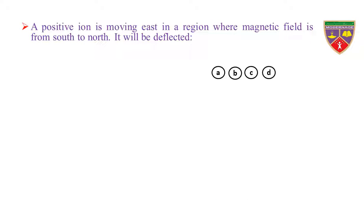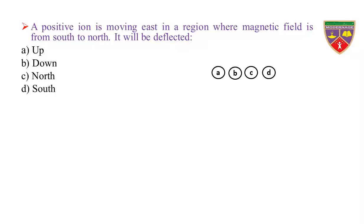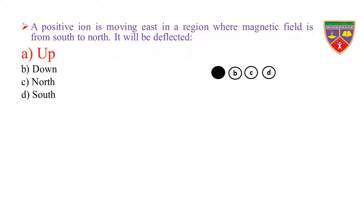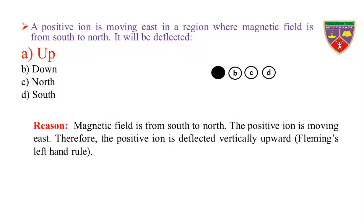A positive ion is moving east in a region where magnetic field is from south to north. It will be deflected: Option A: up. Option B: down. Option C: north. Option D: south. The key is up. Therefore, the correct option is A.